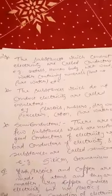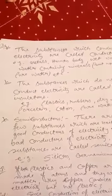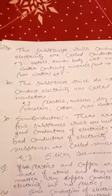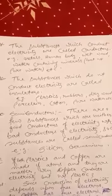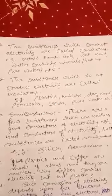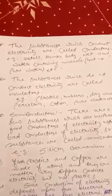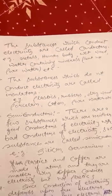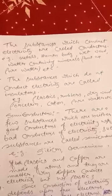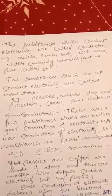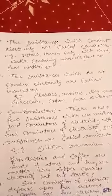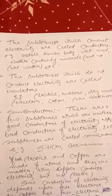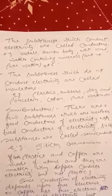Now, there are some substances which conduct electricity and some which do not. The substances which conduct electricity are called conductors. For example, metals, the human body, wet wood, and water containing minerals — but not pure water. Different metals have different conductivity; they are not equally alike. For example, silver is the best conductor of electricity.